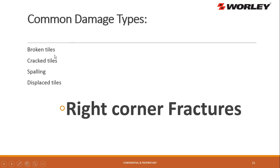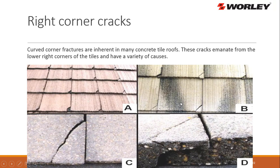Common damage types: broken tiles, cracked tiles, falling, displaced, and the famous corner crack — the right bottom corner crack. A lot of PAs say this is wind damage, that they shuffled and broke. But you're only going to find a right bottom corner crack on a concrete flat tile. This is very common and is due to expansion and contraction or the tile being installed too tight. This is not wind damage.